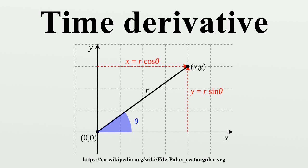As a generalization, the time derivative of a vector is defined as the vector whose components are the derivatives of the components of the original vector.